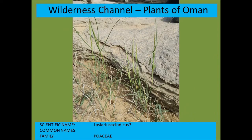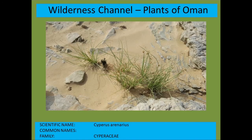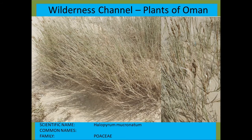Lasiurus scindicus — a grass species. Cyperus arenarius — a sort of coastal sedge species. Halopyrum mucronatum — a grass species that holds desert sands, a typical example.